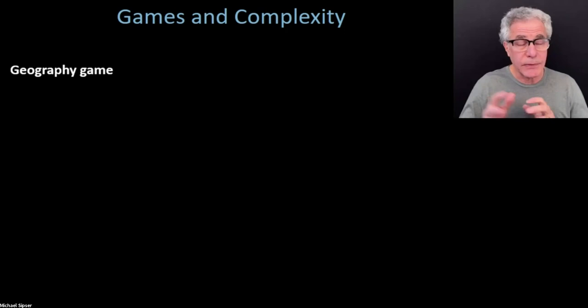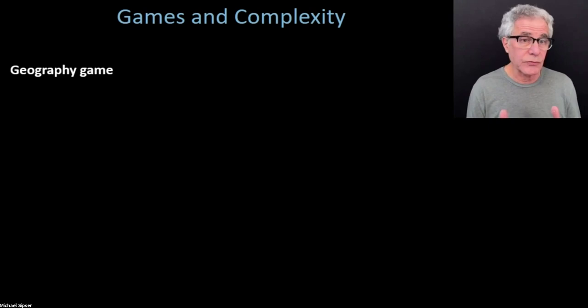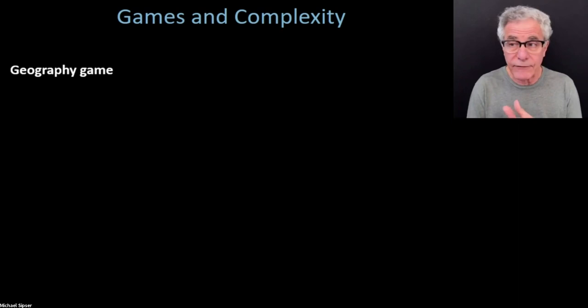Then the first player would have to respond with a place that starts with A because Nebraska ends with A — maybe Alaska, which also starts and ends with A. Then Arkansas would be a reasonable response to that. It ends with S, so San Francisco, and so on.